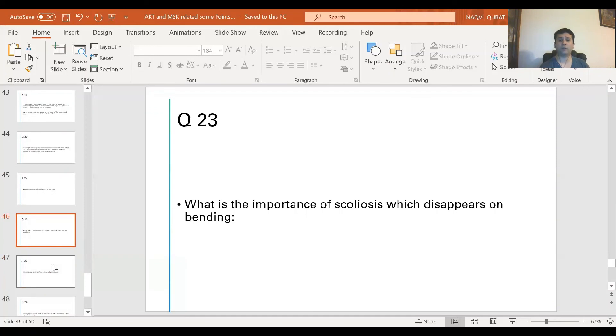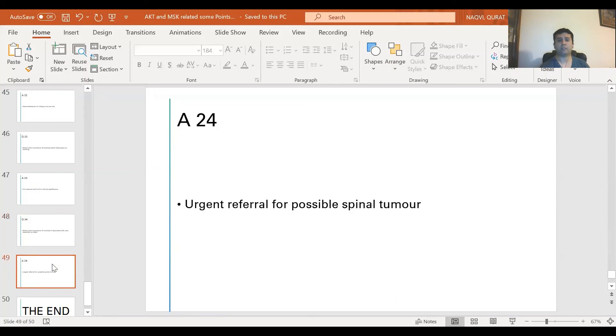Question 23: What is the importance of scoliosis which disappears on bending? Answer is it is basically postural and of no clinical significance. Question 24: What is the importance of scoliosis if associated with pain especially at night? The answer is urgent referral for possible spinal tumor.